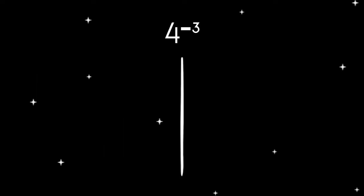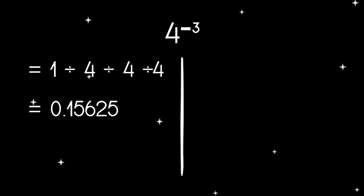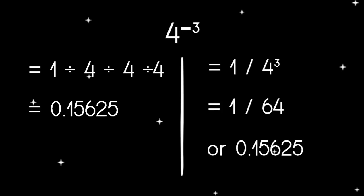Let's try and check if the law of exponents and the long method give the same answer. With 4 raised to the power of negative 3, the long method gives 1 divided by 4 divided by 4 divided by 4, which equals 0.015625. With the law of exponents, that would be 1 over 4 cubed, or 1 over 64, which equates to the first method.